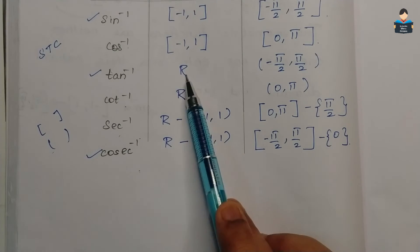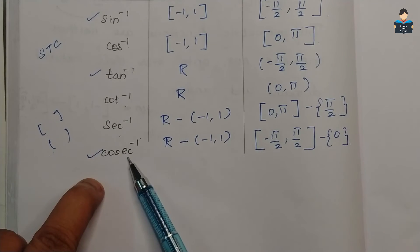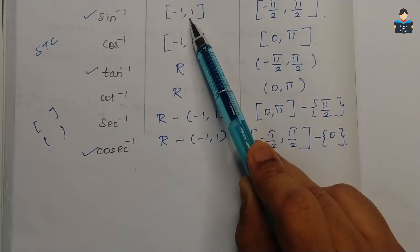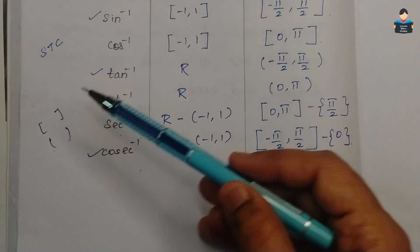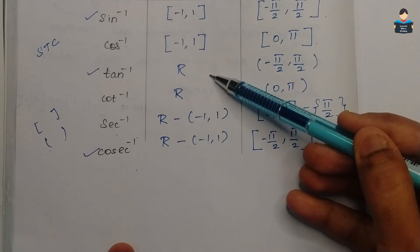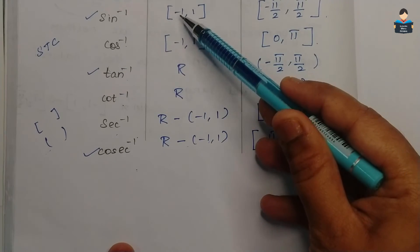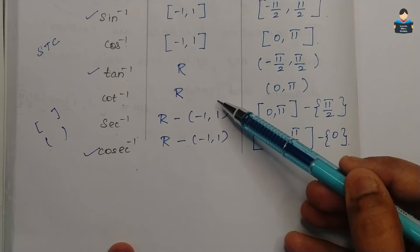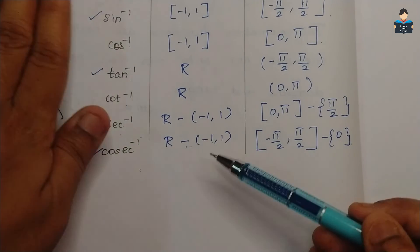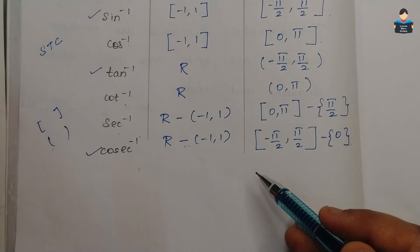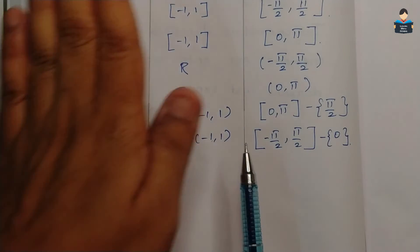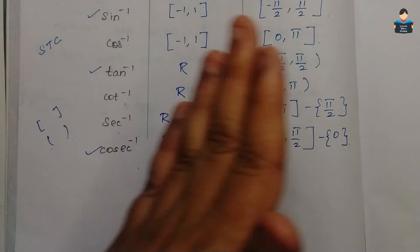Looking at the full table: sin inverse, tan inverse, and cosec inverse form one set with domain related to minus 1 to 1 and real numbers. Cos inverse, cot inverse, and secant inverse form the second set.